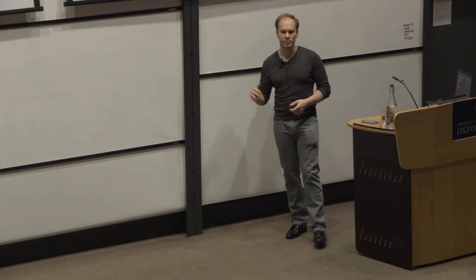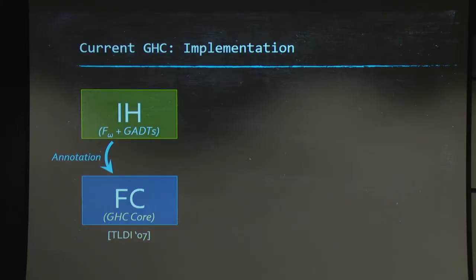It's a language IH with enough type annotations so that we can have decidable type checking. And in particular, you can annotate any IH term to an FC term by just adding all the annotations that are required. And conversely, you can get rid of all these annotations and get back an IH term.